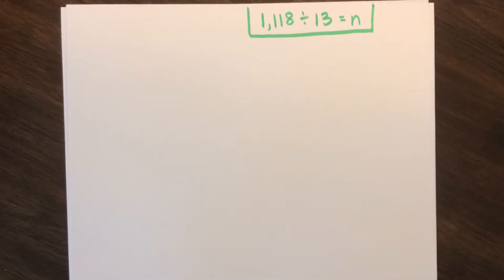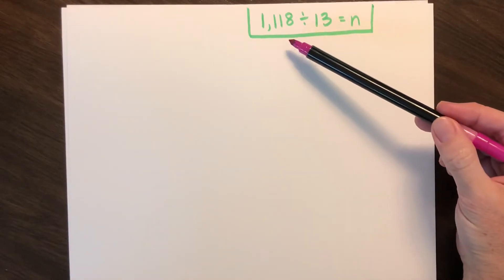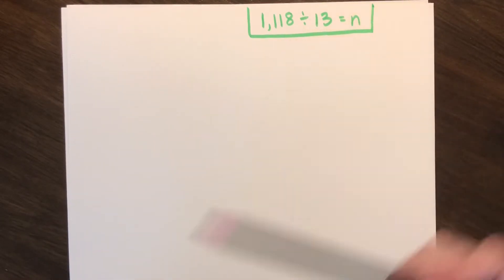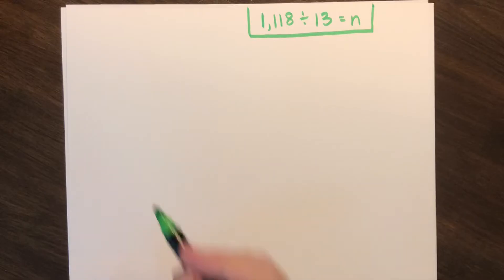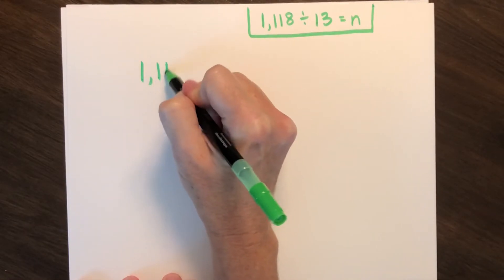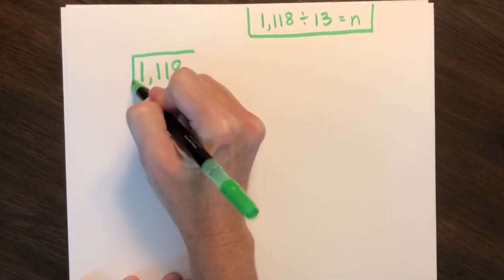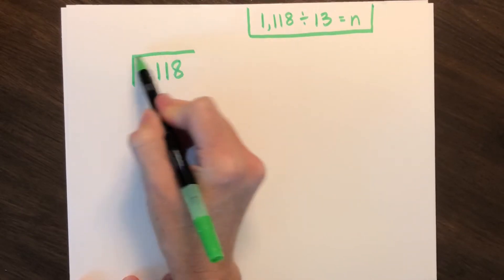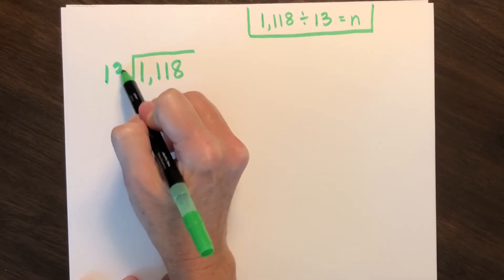Let's do another one. Here's one with a two-digit divisor, but we have a four-digit dividend. So take a minute, pause the video if you need, and set up your problem to show what this would look like to solve for partial products.